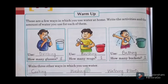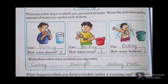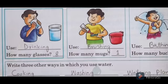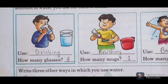These are a few ways in which you use water at home. Write the activities and the amount of water you use for each of them, as I wrote the amount of water by myself. The first activity is drinking. How many glasses? I drink 8 glasses in a day.